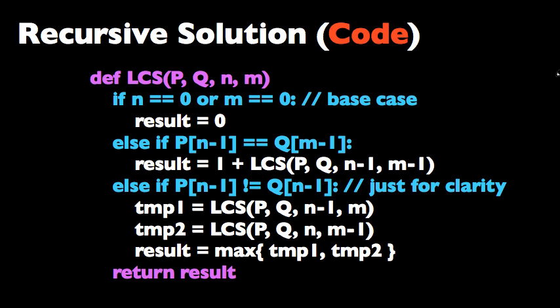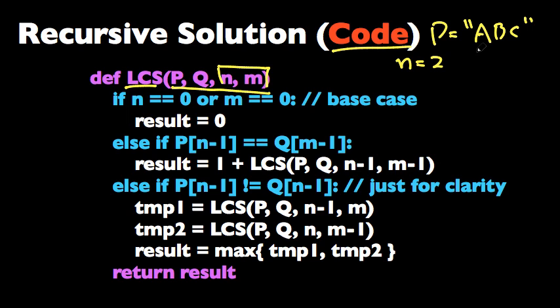Here's a recursive solution in code. We define the function LCS of P, Q, and M and N, those are integers. They are here because I don't want to recreate strings every time I call this function. Here's what I mean. So let's say P equals ABC and we have N equals 2, then instead of looking at the whole string, we'll just look at the first two characters. And it's the same thing with Q and M. If Q is ABC and M is 1, we'll just look at the first character, so this way we don't have to reproduce strings every time.